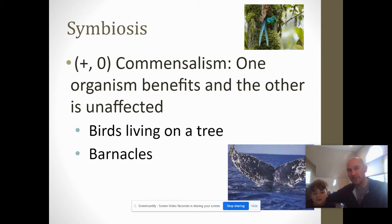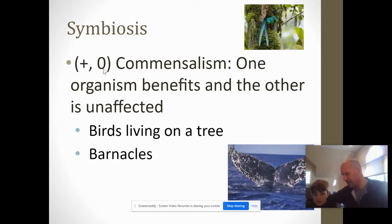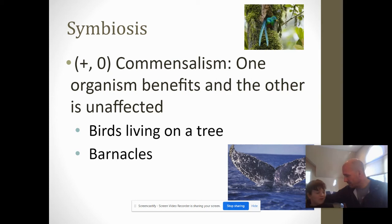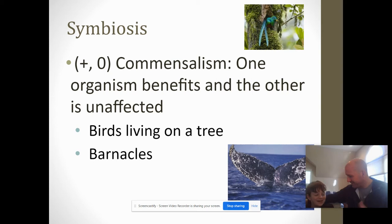Commensalism is a plus-zero relationship — that zero doesn't mean negative, it means nothing. One organism benefits and the other one doesn't care. For example, barnacles grow on whales. The barnacles are helped because they're filter feeders — they need water movement and food to filter through to survive. They get a free ride with the whale, and the whale could care less. It doesn't harm the whale at all. For a barnacle, getting to live on a whale instead of rocks is like winning the lottery — you're seeing the world.